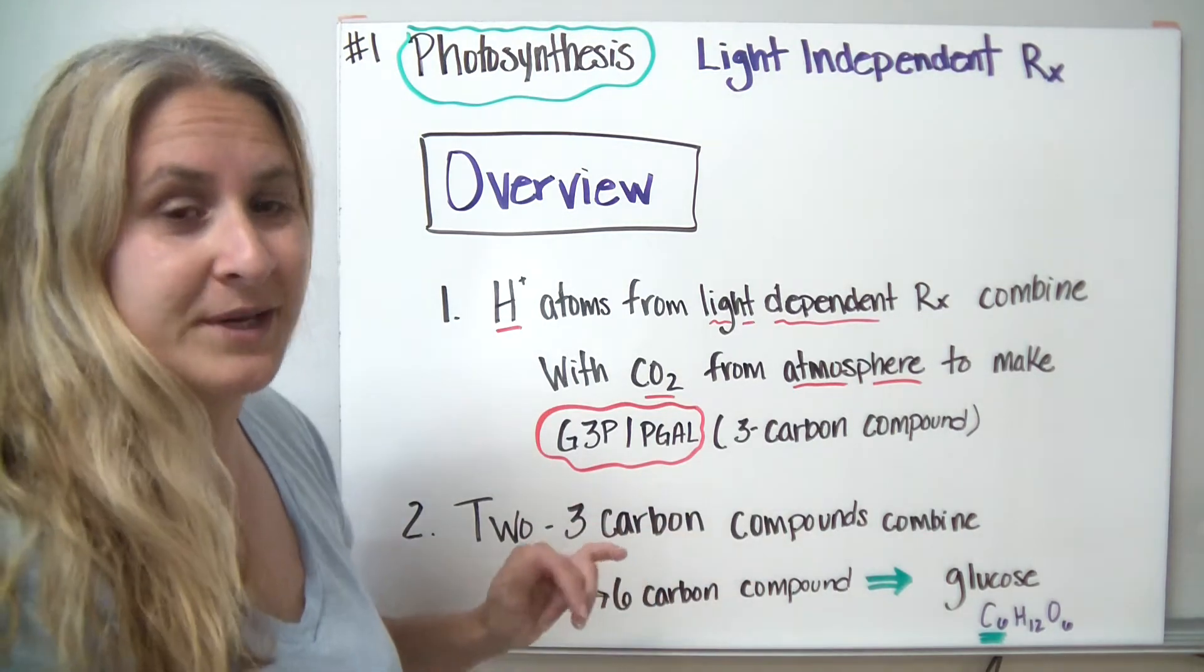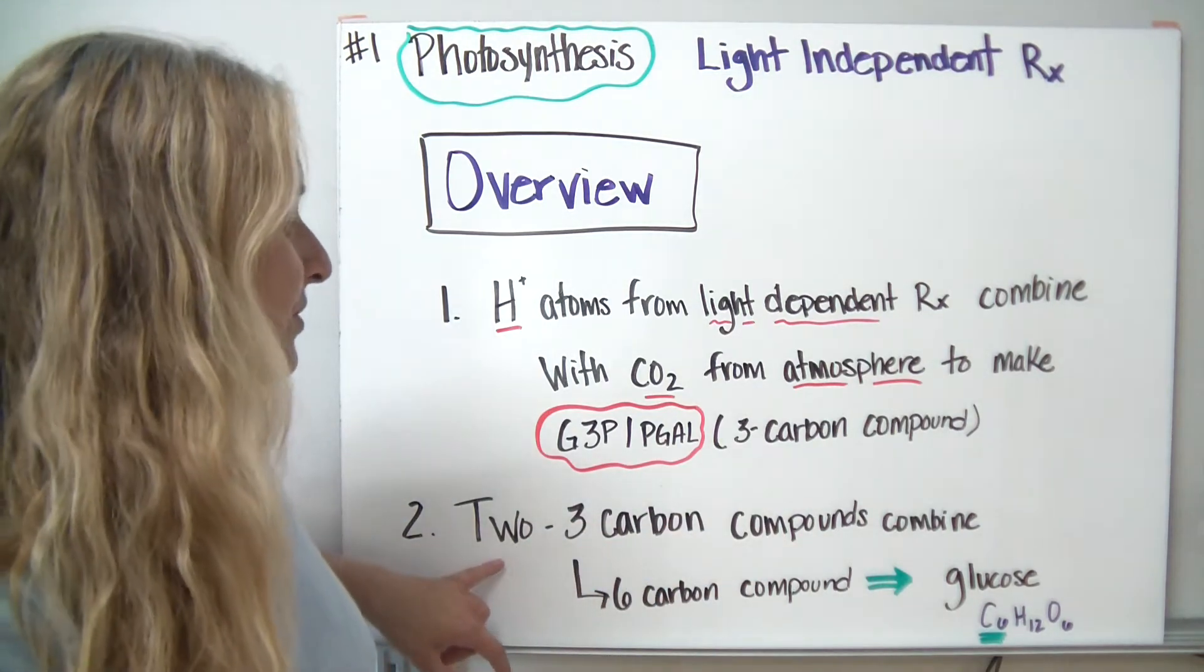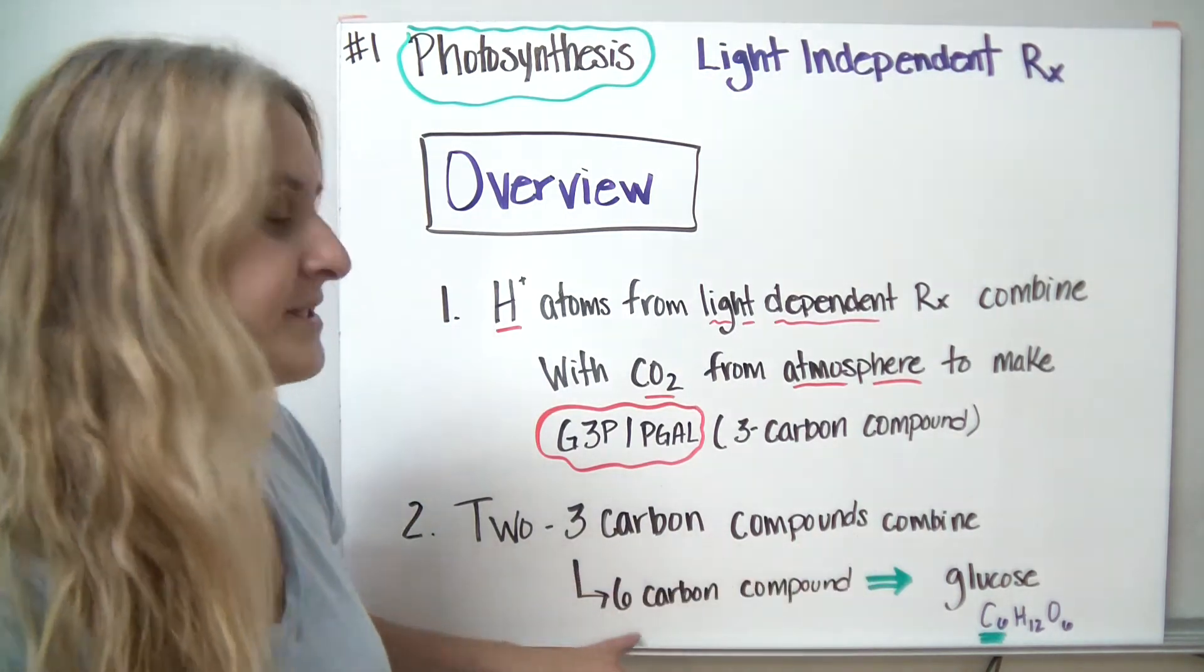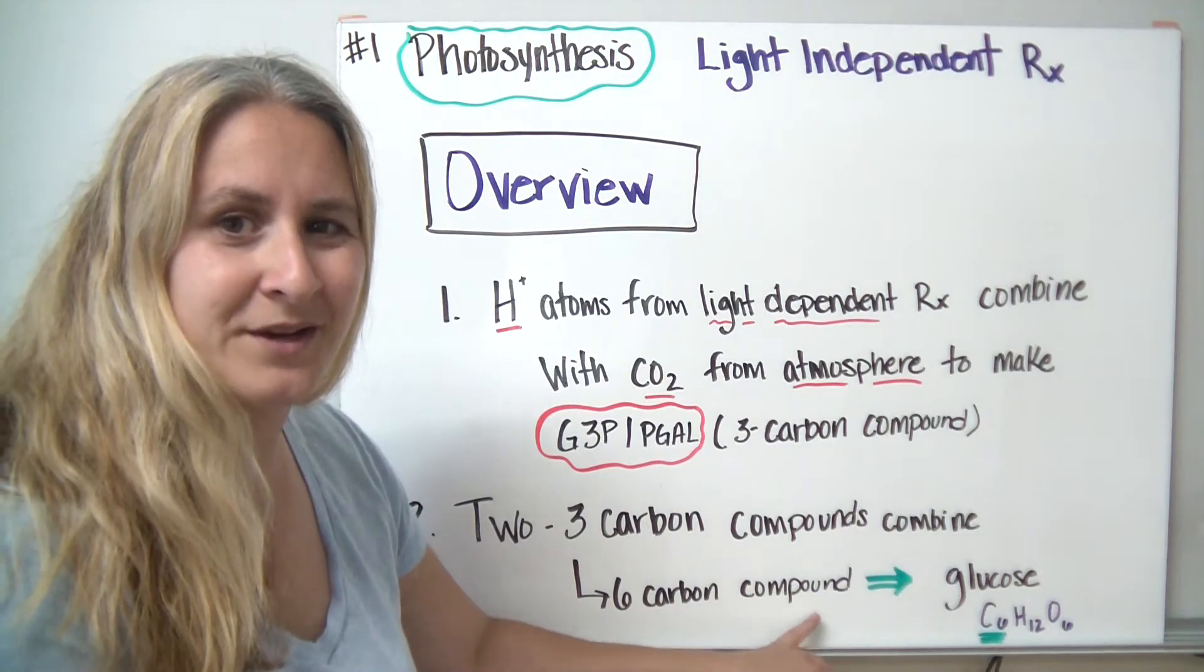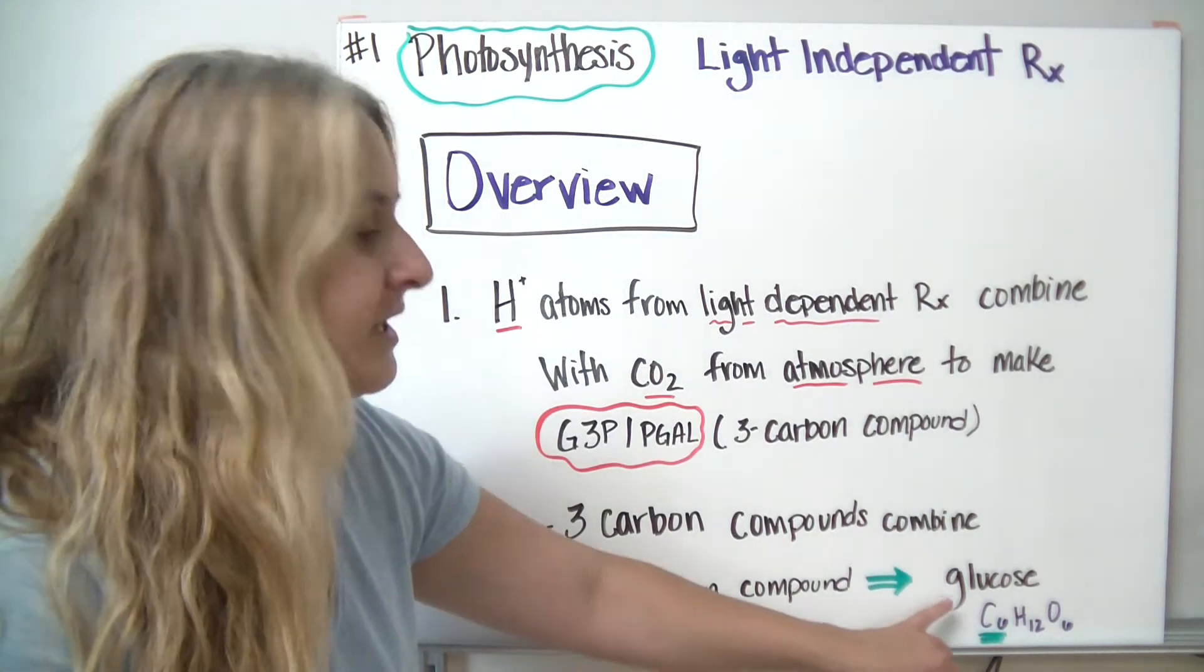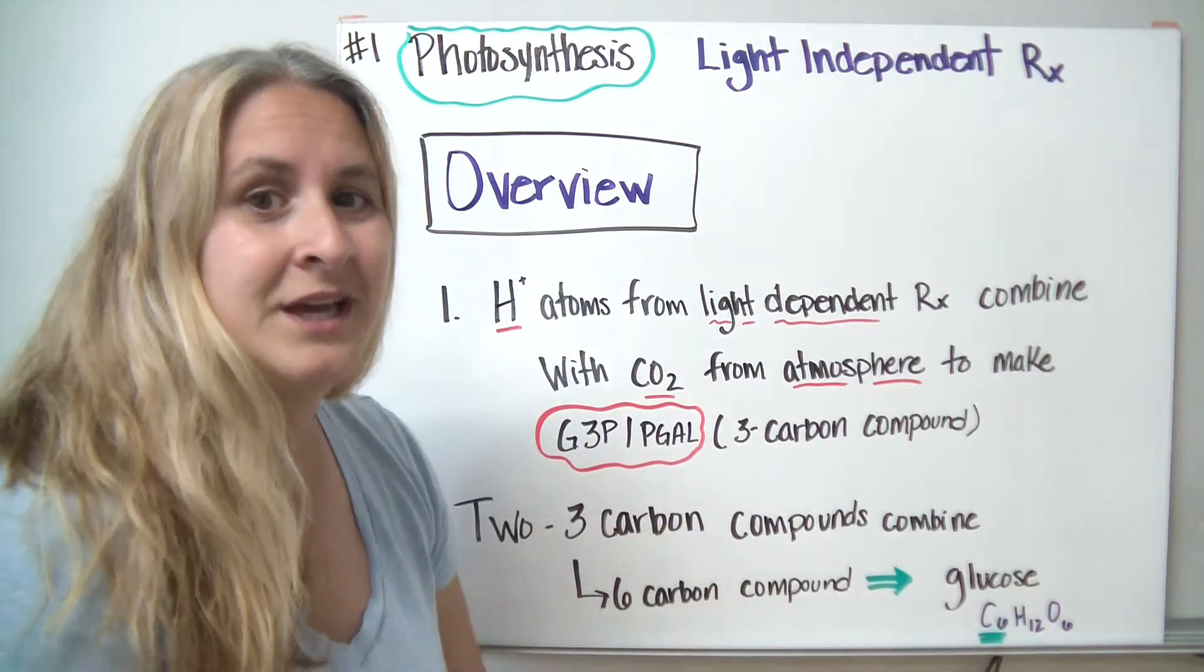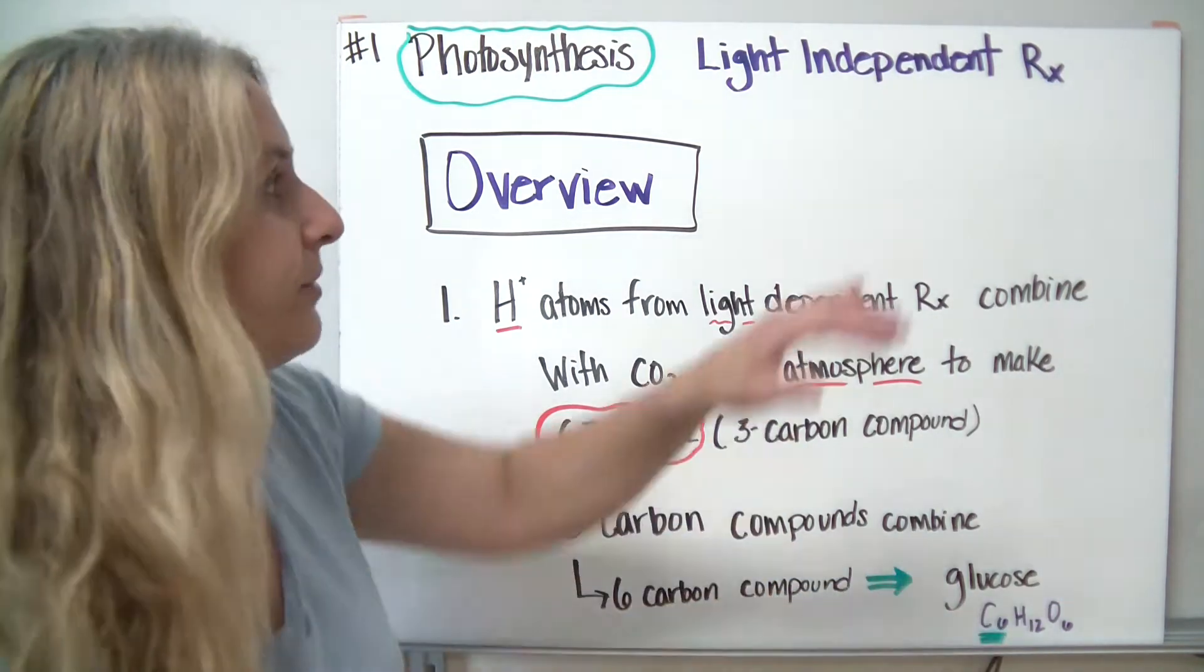Easiest to know it's a three-carbon compound. During step two, two three-carbon compounds are going to combine to make a six-carbon compound. The most common six-carbon compound we know that our body uses is glucose, C6H12O6. Now let's take a look at the reaction in a little bit more detail.